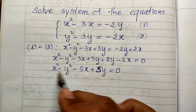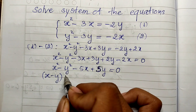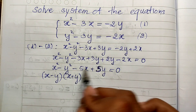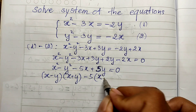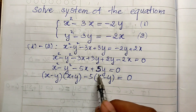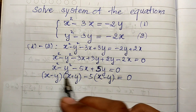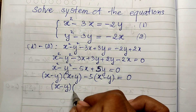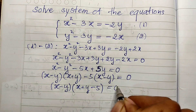Now I factor this expression. I get two factors from x squared minus y squared: that is (x minus y) times (x plus y). Then I take minus 5 out from the remaining terms, giving minus 5 times (x minus y). So I can factor out (x minus y), giving (x minus y) times (x plus y minus 5) equals 0.